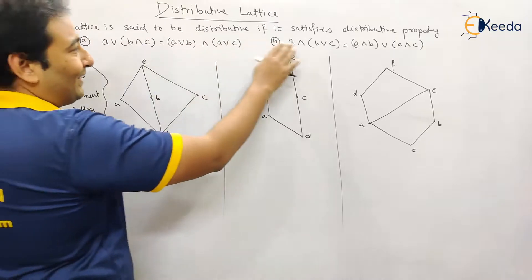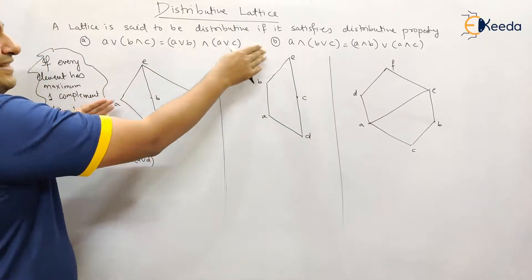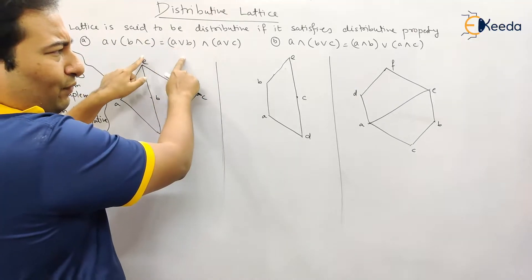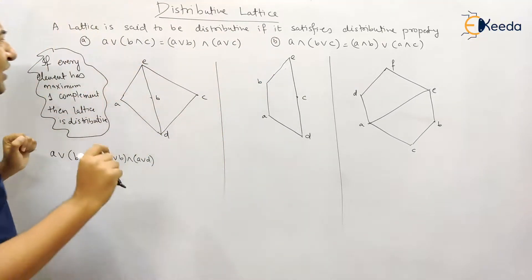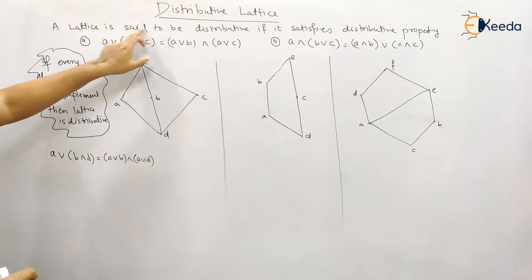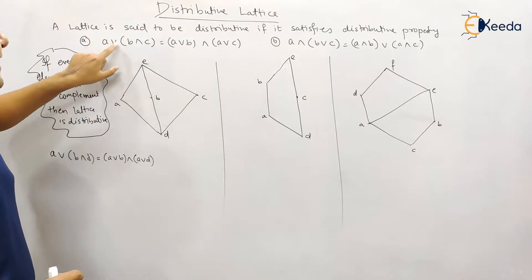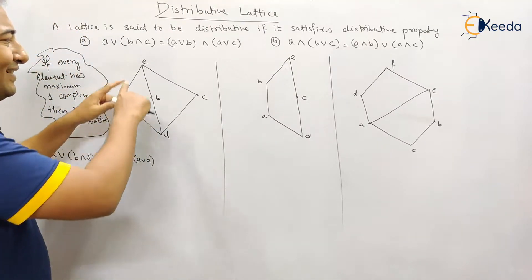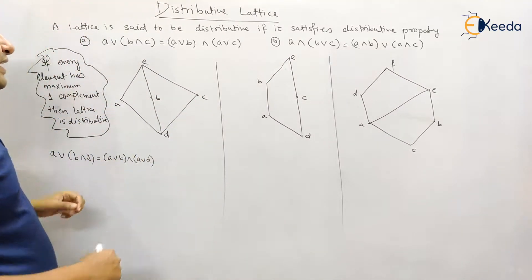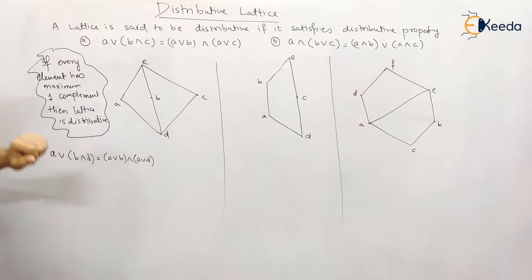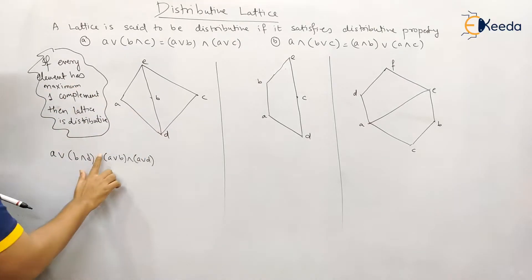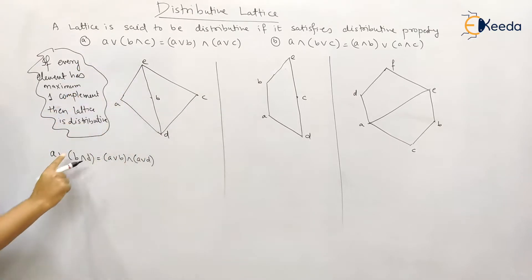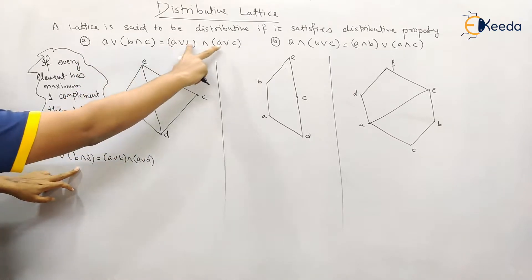If you observe this property, you can consider any one property — just for explaining I'm considering only one property; in the exam you need to show with both cases. For satisfying this property there should be three elements. You can consider any three elements. Let me take a, b, and d, placing them in this format.